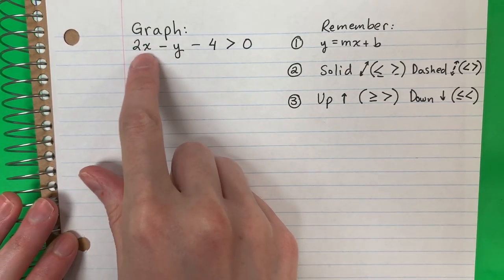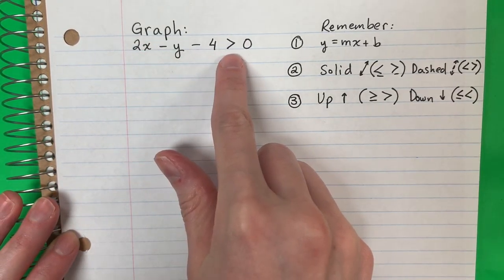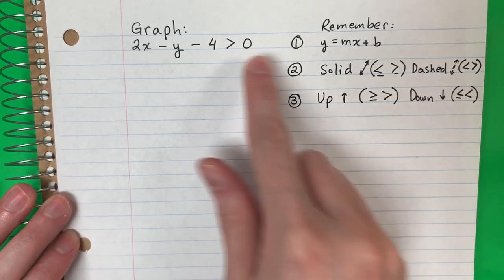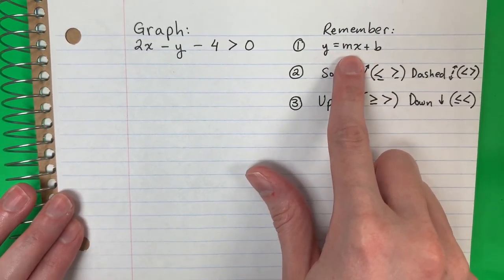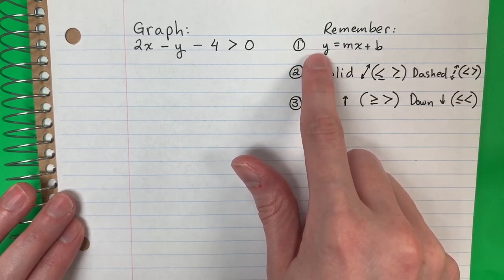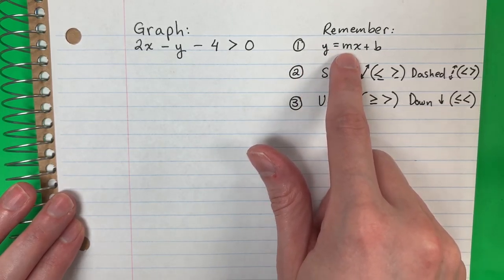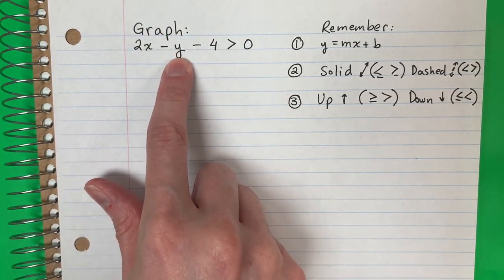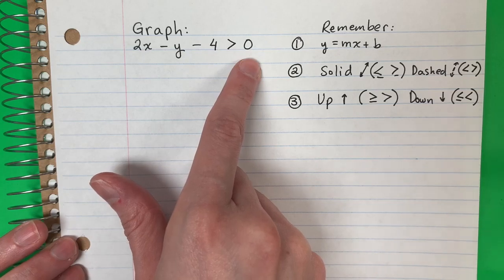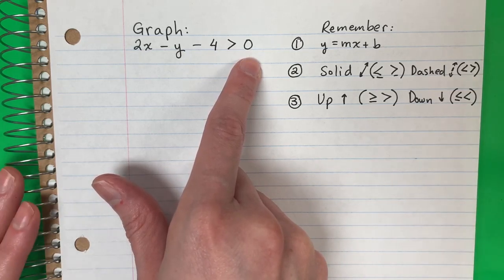Graph the inequality 2x minus y minus 4 is greater than 0. The first step is to make sure that this is in slope-intercept form. So I need the y alone on the left with the mx in the middle. And here this is not in slope-intercept form because the y is not alone and the mx is not in the middle on the right side.